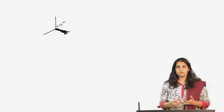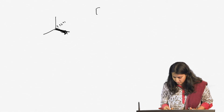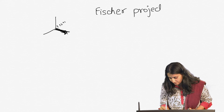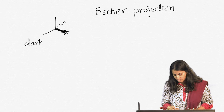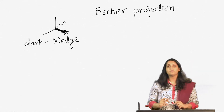In order to draw molecules that have more than one stereocenter, what we use is a representation called the Fischer projection. We are going to look at what Fischer projection is. This is the dash and wedge, and we are going to convert this to a Fischer projection.